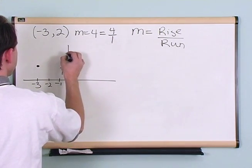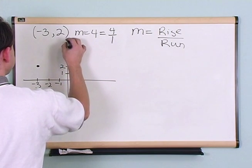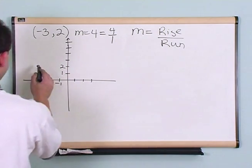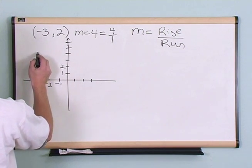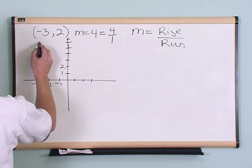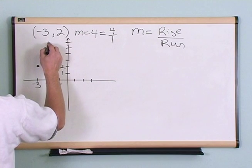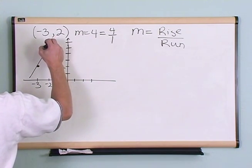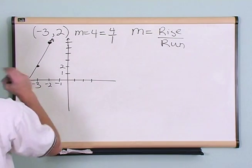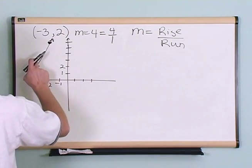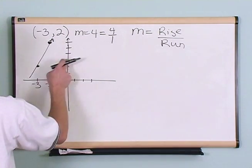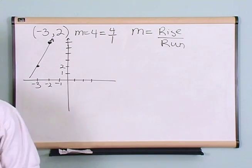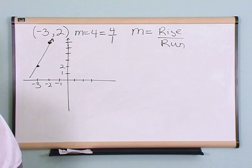I'm going to add a few more tick marks. Rising 4 units: 1, 2, 3, 4. Running 1 unit to the right. So my line is going to look very steep — that's what a slope of 4 looks like. I've got my second point and I can draw the line.